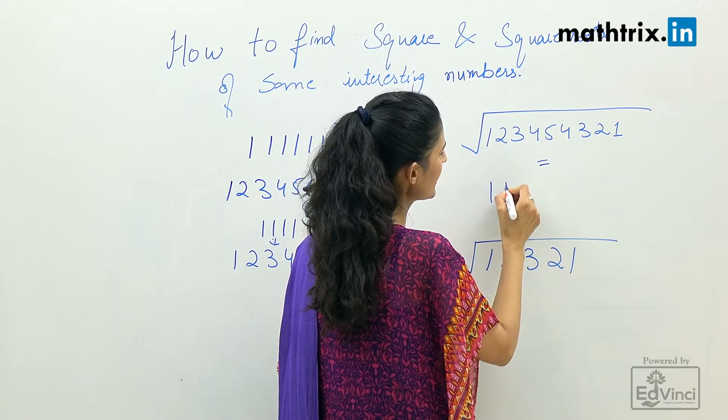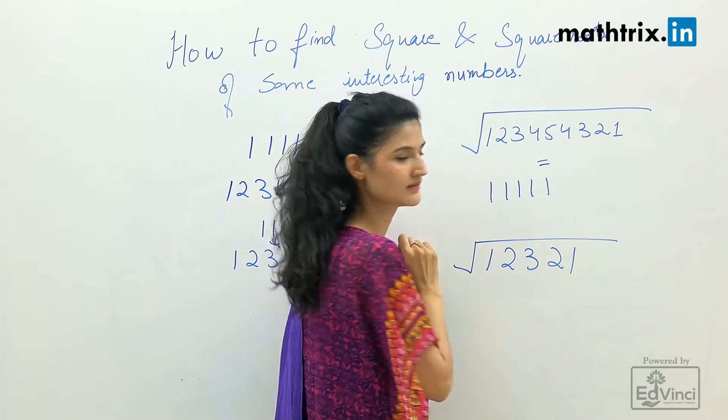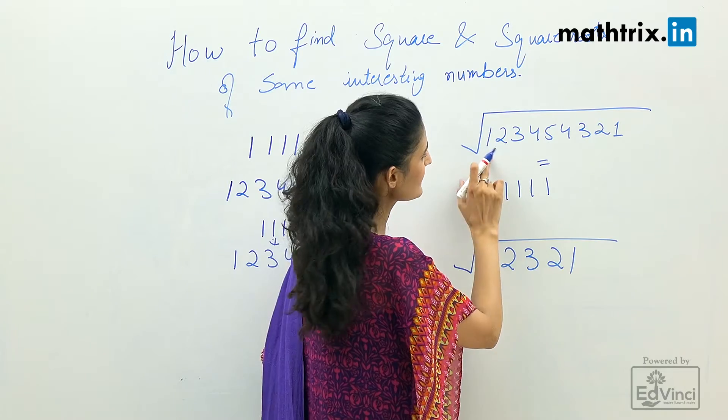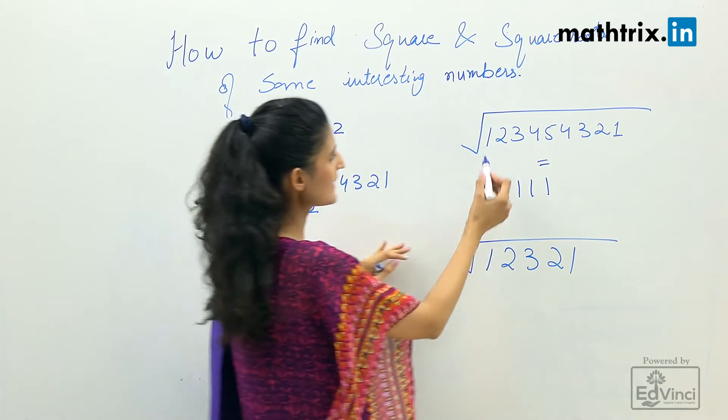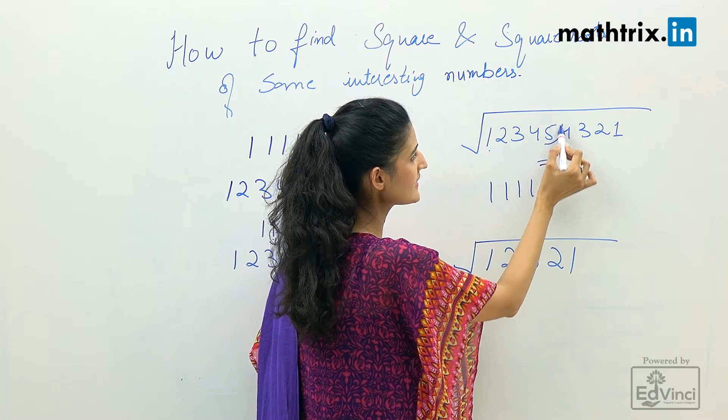So the square root for this number will be 11111. Do you want to know how? Let's see. This is the same number, the same example which I showed you here.